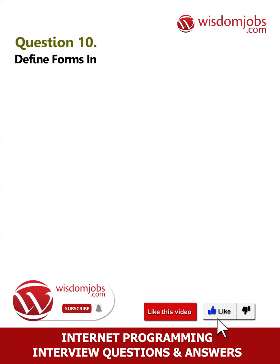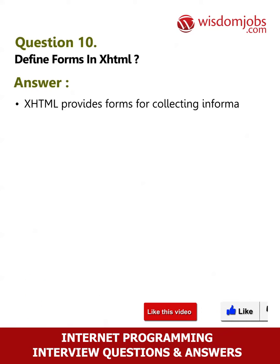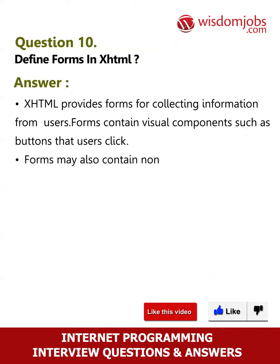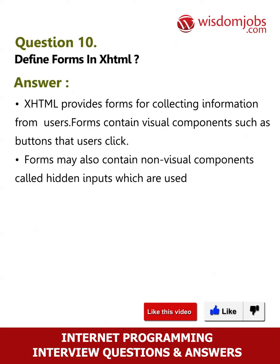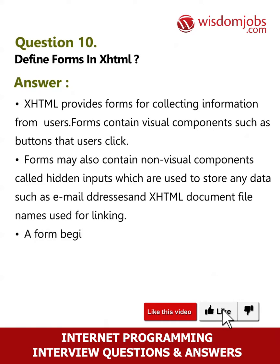Question 10: Define forms in XHTML. Answer: XHTML provides forms for collecting information from users. Forms contain visual components such as buttons that users click. Forms may also contain non-visual components called hidden inputs, which store data such as email addresses and XHTML document file names used for linking. A form begins with the form element. The attribute method specifies how the form's data is sent to the server.